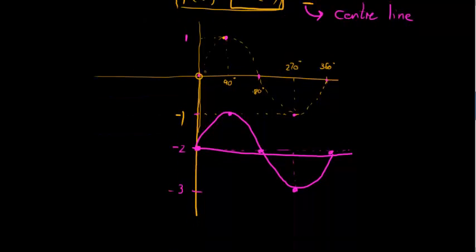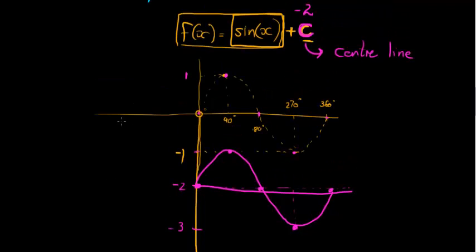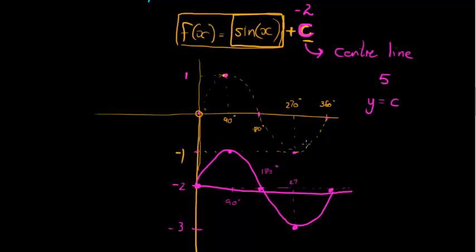And that is why I call it c — because the center line has moved. The constant added outside the sine function is called the center line. It's an imaginary line; just draw it in slightly. y = c is the center line. If c were 5, my center line would be at y = 5. Whatever I used to do on the x-axis, I now do on the line y = c. This demonstrates that c is a position parameter — it moves the position of the graph.